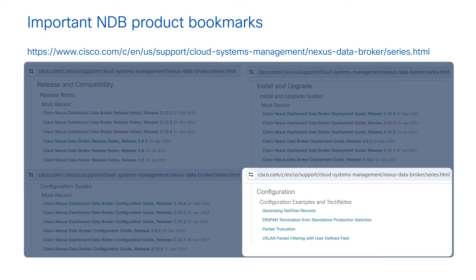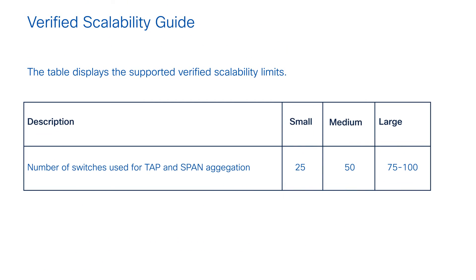The configuration guide helps you configure all the various features from the NDB UI. The tech notes cover complex features — for example, if you want to leverage Nexus Data Broker to generate NetFlow, there is a white paper detailing the steps needed to configure the controller. The verified scalability guide shows that small-scale deployments can manage up to 25 switches, medium up to 50 switches, and large-scale deployments can handle between 75 and 100 switches.